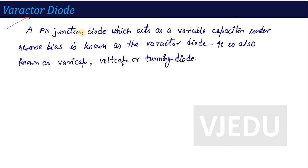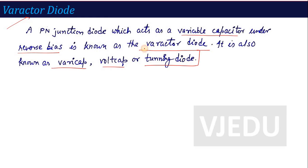Varactor diode is a p-n junction diode which acts as a variable capacitor under reverse bias condition — that is known as varactor diode. A p-n junction diode which is in reverse bias condition will act as a variable capacitor. It is also known as varicap, volt cap, or tuning diode, by which you can increase or decrease the capacitance of the diode. So, how does the varactor diode make the capacitance vary? Let's discuss this.